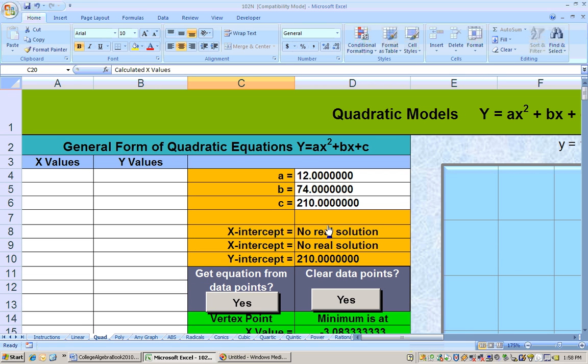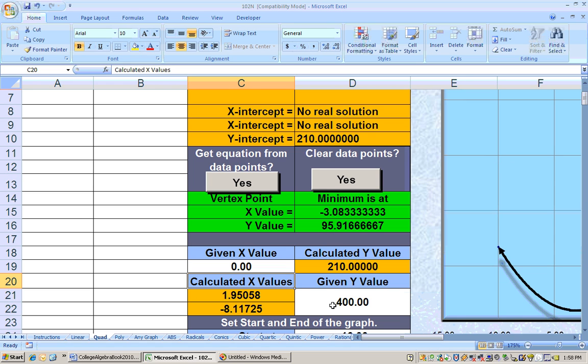If I want to find out when the number of bacteria was 400,000, just put the 400 here, because it's in units of thousands. So type in 400 here and you get two answers. One makes sense: the number of bacteria was 400,000 at 1.95 hours after it was out of the refrigerator, or 8.11 hours before you took it out.